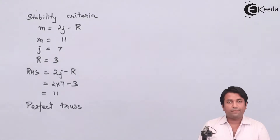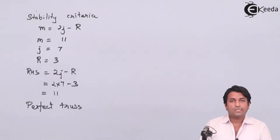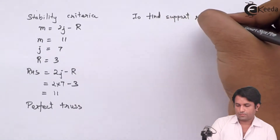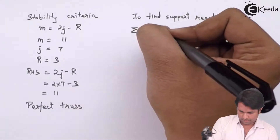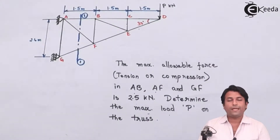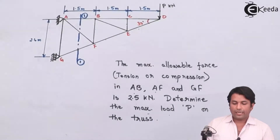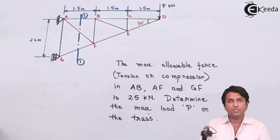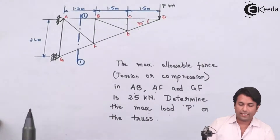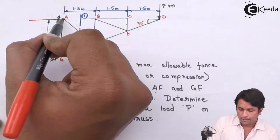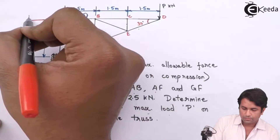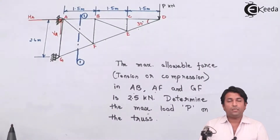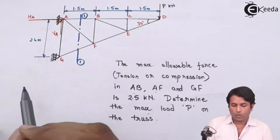After doing the stability criteria check, we need to find out the support reactions. When applying the conditions of equilibrium I need to first draw the free body diagram. When I remove the hinge support I will have two support reactions: one horizontal reaction and one vertical reaction. For the roller support, there is one reaction perpendicular to the surface, which in this case will be the horizontal reaction.